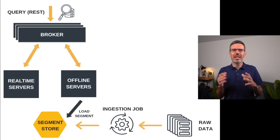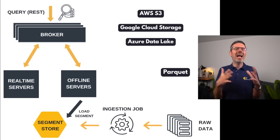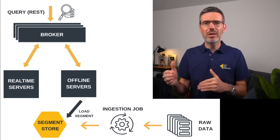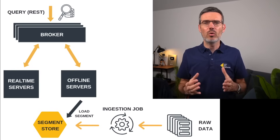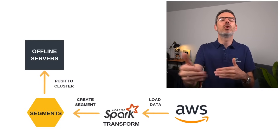Pinot also supports batch ingestion for historical data or scheduled backfills. Typically, data is pulled from cloud storage like S3, Google Cloud Storage, or Azure Data Lake in formats like Parquet, Avro, or CSV. A job pulls data, converts it into segments, and loads it into offline servers. These ingestion jobs are usually run by external tools like Spark, Airflow, or custom scripts which prepare and transform the data. For example, a Spark job that aggregates user events nightly, transforms it, and pushes it into Pinot once a day.